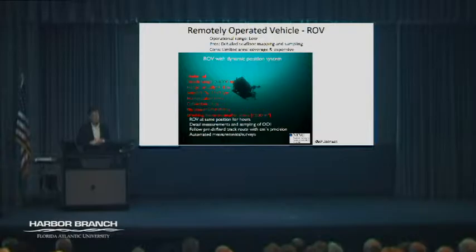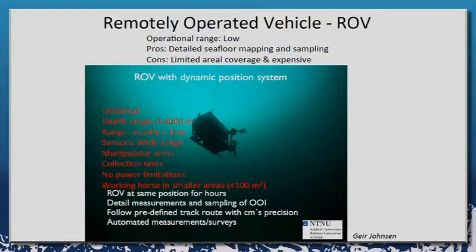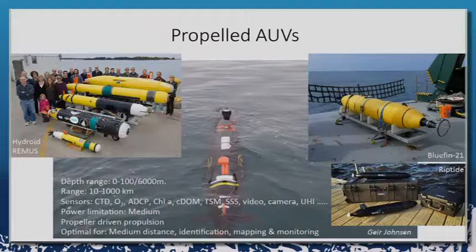Another type of vehicle is the remotely operated vehicle, or ROV. It's very efficient at looking at relatively small areas in great detail. It has thrusters to maintain position and robotic arms that can be controlled remotely because it's tethered. People at Harbor Branch have done a lot of great work with ROVs, particularly around coral beds, sampling corals and sponges. It's also a powerful platform for sensors requiring a lot of power, such as LiDAR laser imaging systems.